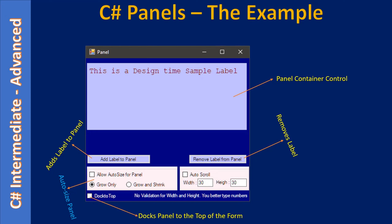With 'Grow Only', when you keep removing labels and there is only one design-time label plus one dynamically added label, the panel will resize to show only those labels but won't shrink beyond a certain limit. That limit is the initial height set during form design. 'Grow and Shrink' doesn't have that restriction — it will grow and shrink just like the auto-size of a label control, where the label grows with added characters and shrinks when you remove them.